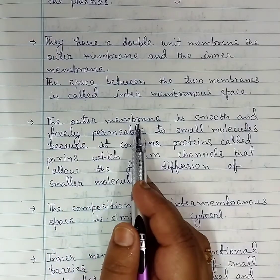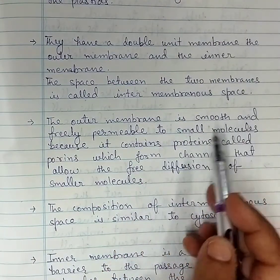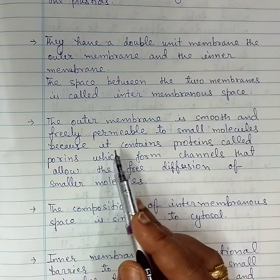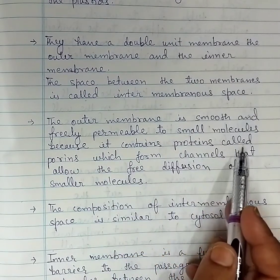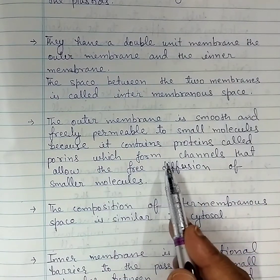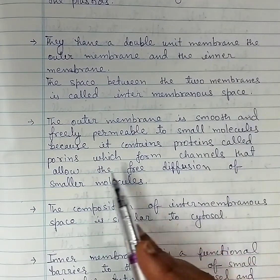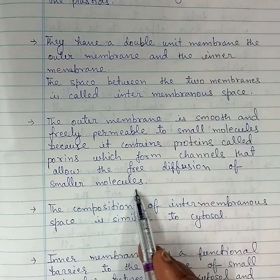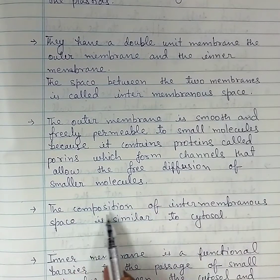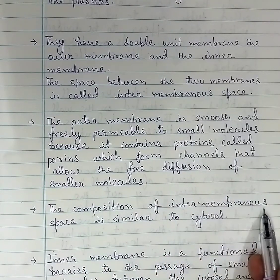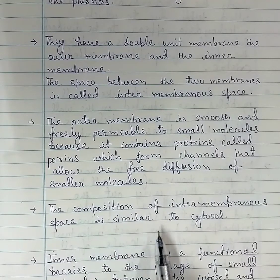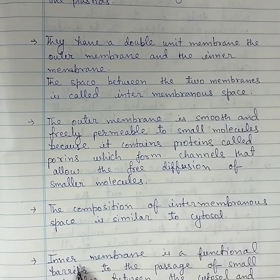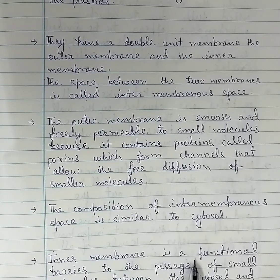The space between the two membranes is called the inter-membranous space. The outer membrane is smooth and freely permeable to small molecules because it contains proteins called porins, which form channels that allow the free diffusion of smaller molecules. The composition of the inter-membranous space is similar to the cytosol.